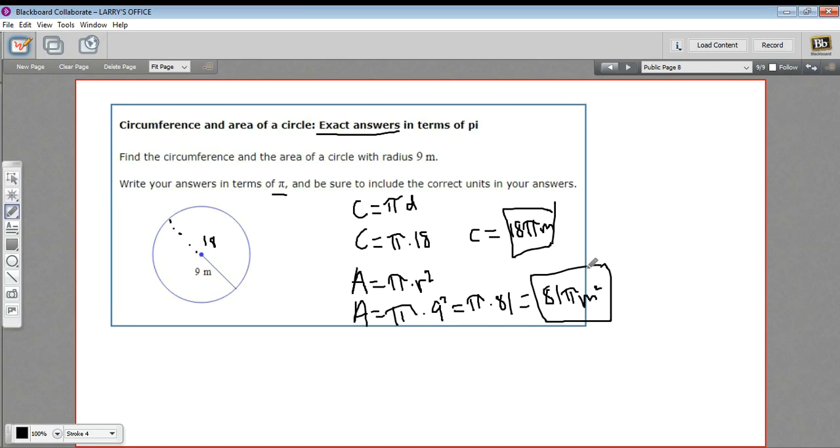So these two answers now are exact. They're written in terms of pi, so they have the π in them. If you wanted to find an approximation, you could use some number like 3.14, some more detailed number to find an approximation. But as these are written, these are exact answers in terms of pi.